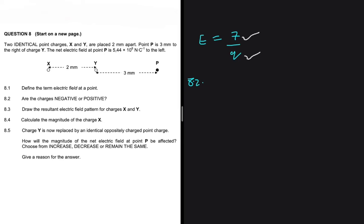When you have a point P, you can always treat that point as a positive charge to answer these kinds of questions. If we take point P as a positive charge and it is experiencing an electric field to the left, that tells us there is a negative charge pulling it to the left. So we can conclude that X and Y are both negative charges, since they are pulling the positive point charge to the left. If they were positive, they would be pushing it to the right.